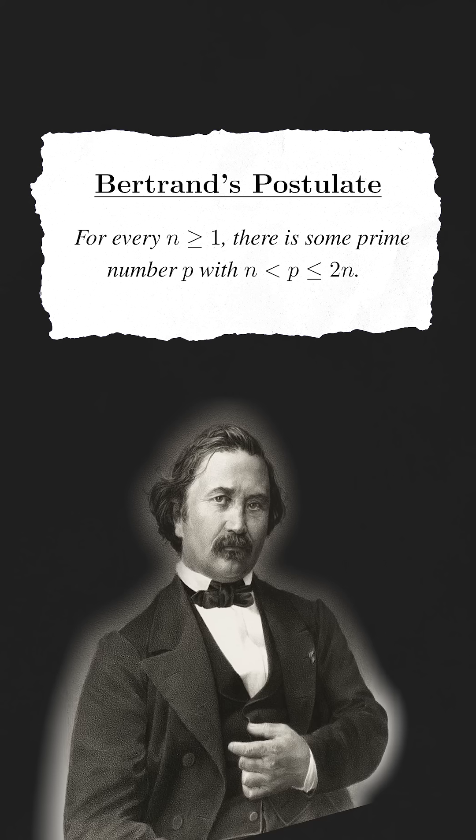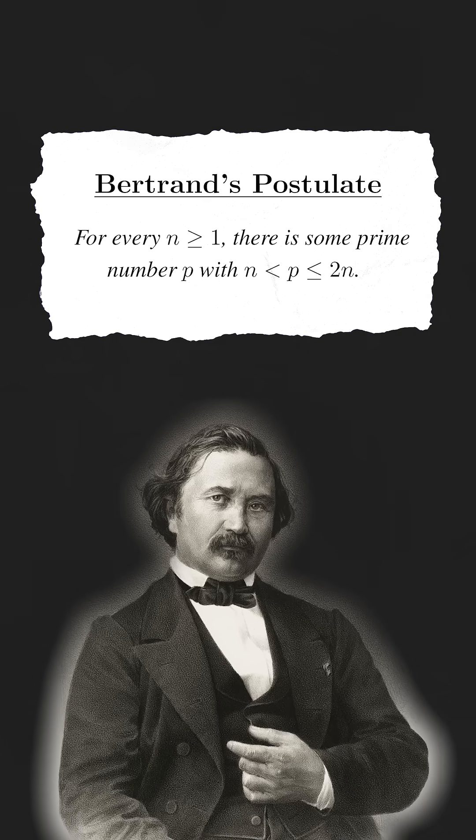Well, let's take a look at Bertrand's postulate, which is a rather important result from number theory that was proven back in 1852. The theorem states that for every natural number n, there exists a prime number between n and 2n.